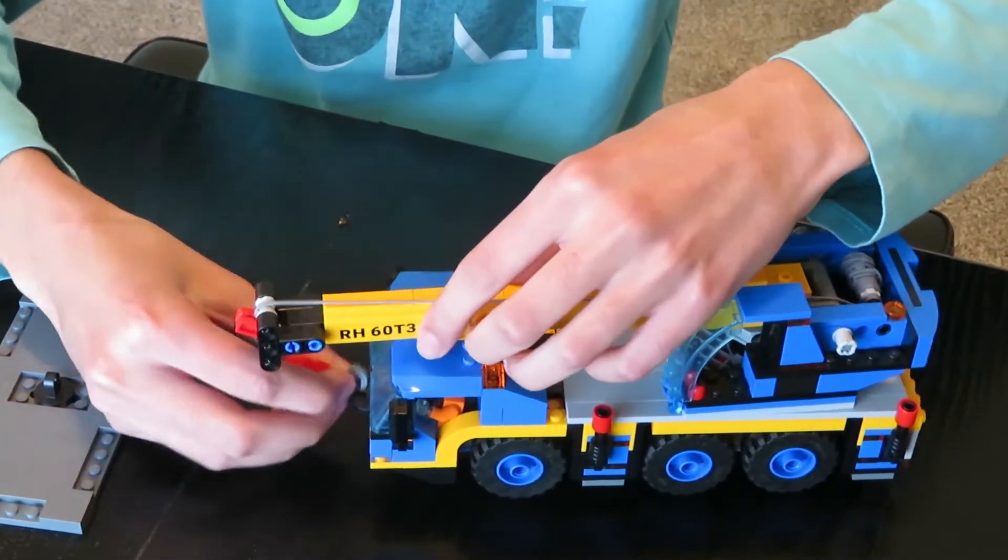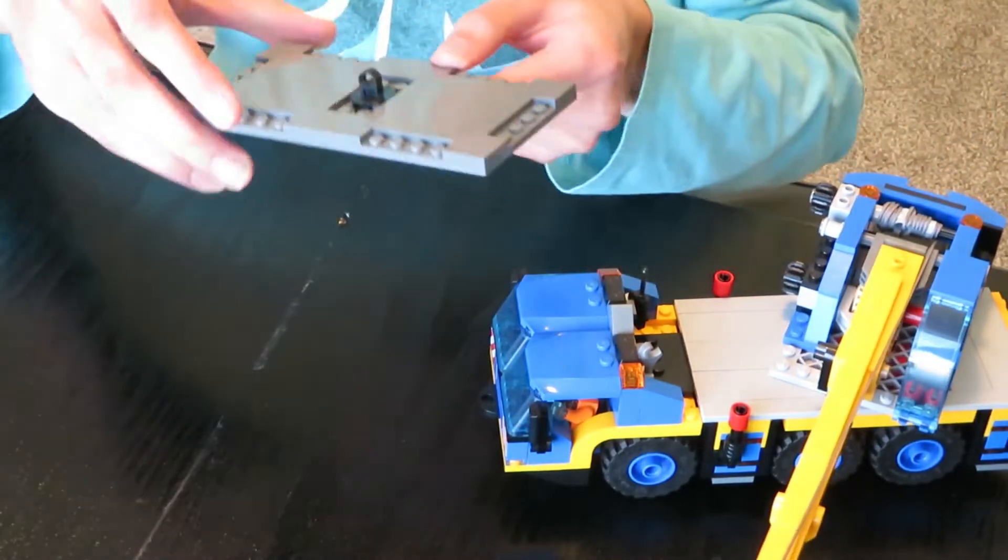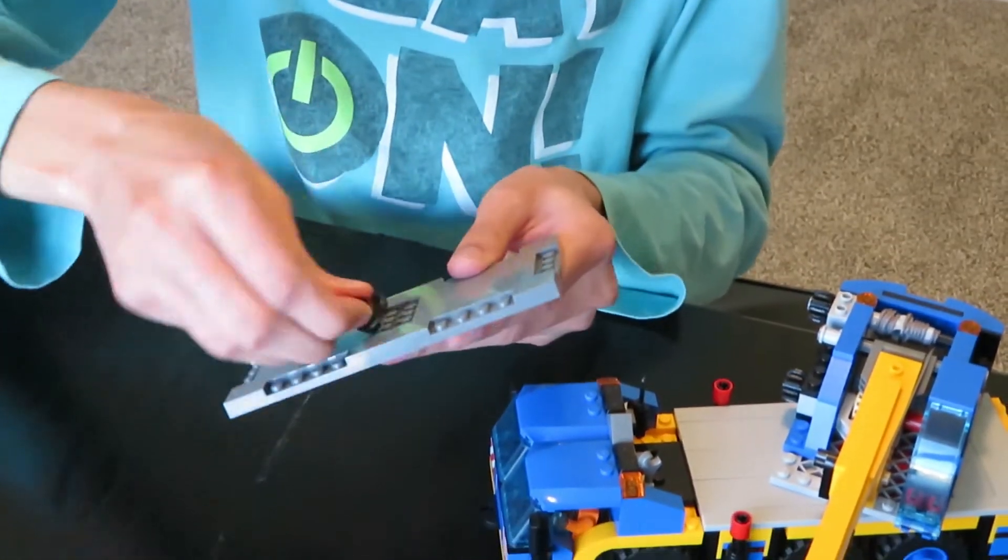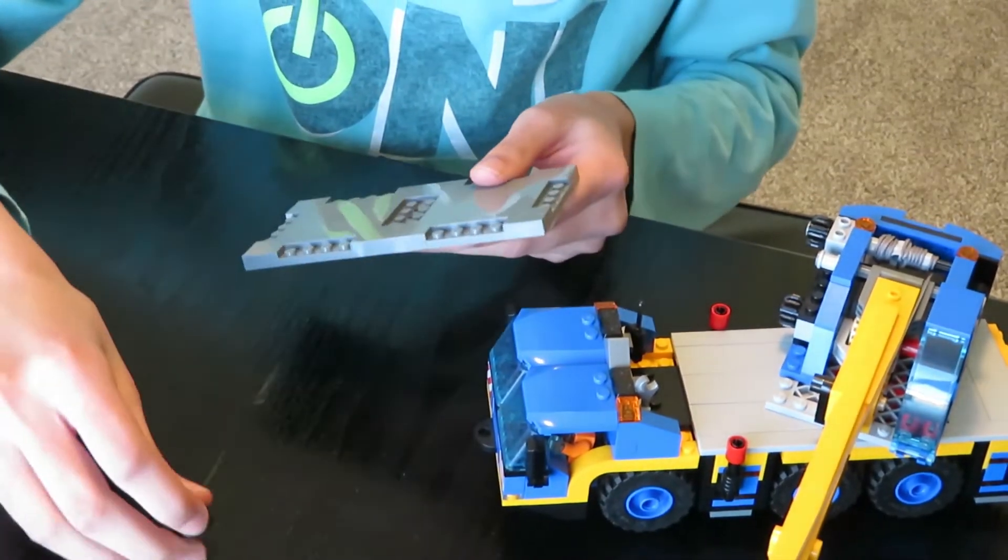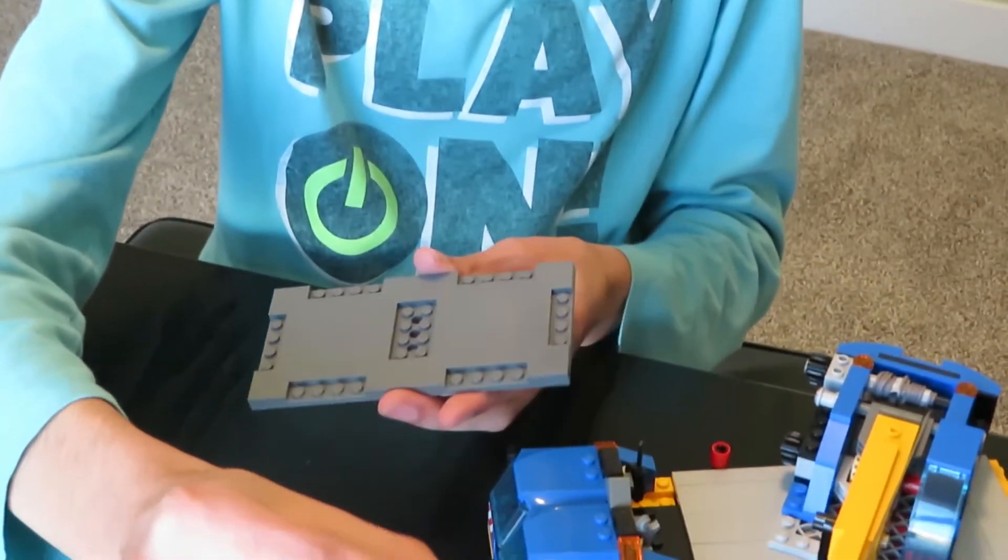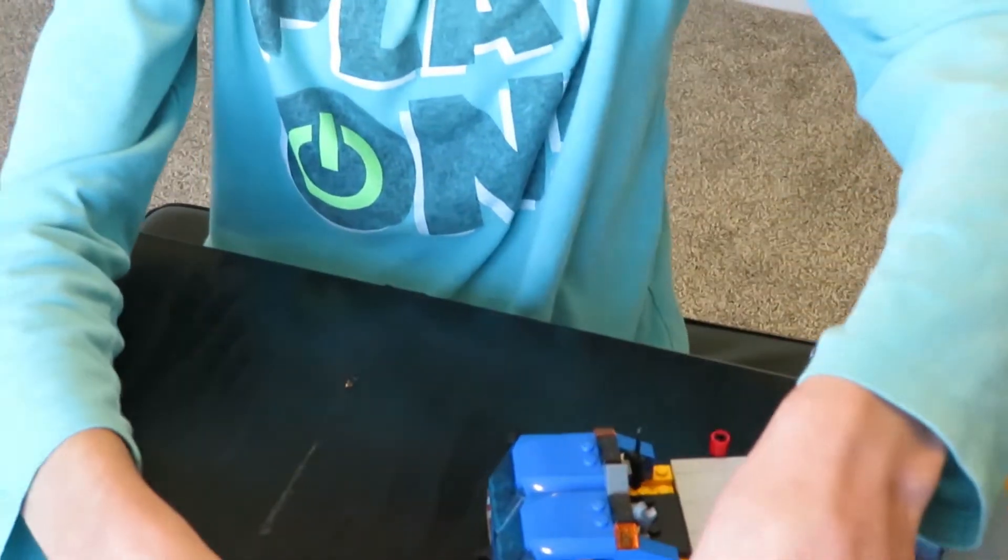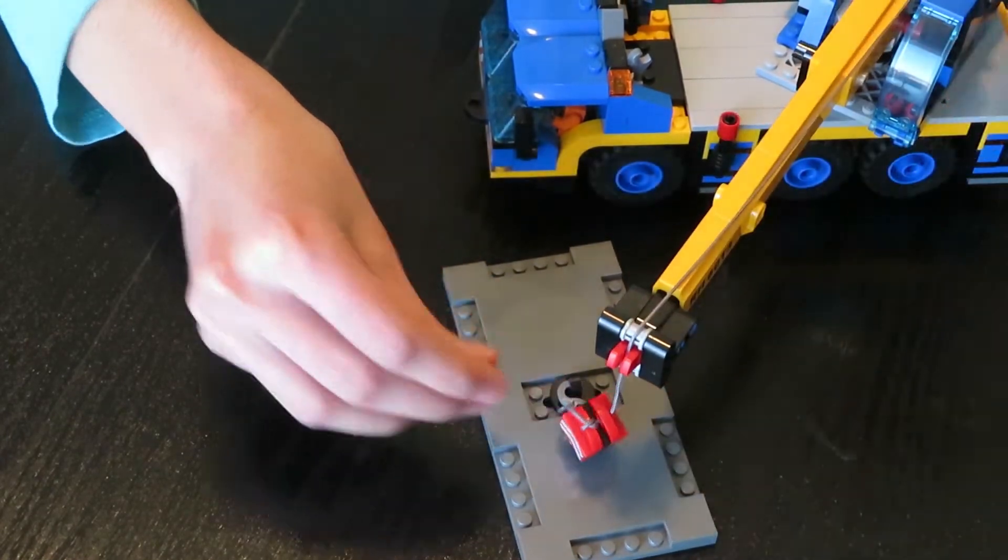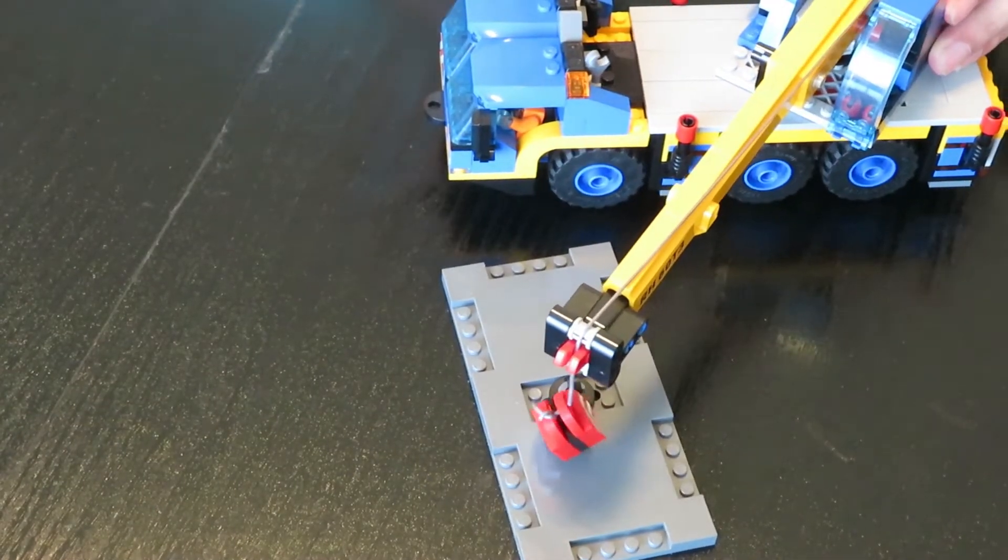And it comes with this piece - this 8 by 16 road plate - and it has this black piece over here. This is a grab. You could put the hook in this and then hook it up to that crane, and then you can lift the whole thing up.